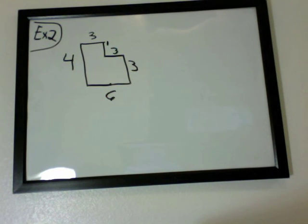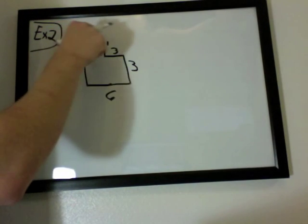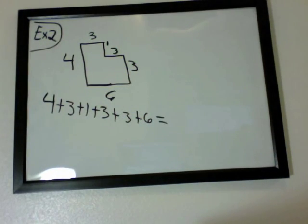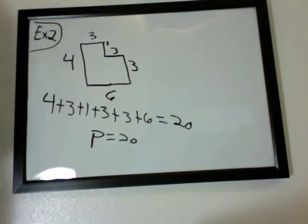In this example, example number 2, we'll find the perimeter of this weird shape. By doing this, we just add up all the sides. 4 plus 3 plus 1 plus 3 plus 3 plus 6. And when you do that, you should get 20. So the perimeter is 20.